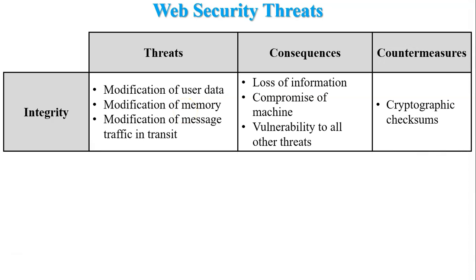A cryptographic checksum works as follows: before the sender sends data, a checksum is generated and appended with the message sent to the receiver. At the receiver end, the receiver generates a checksum. If the receiver's checksum and the appended checksum generated by the sender are the same, it means there is integrity in the message and the receiver accepts that message.